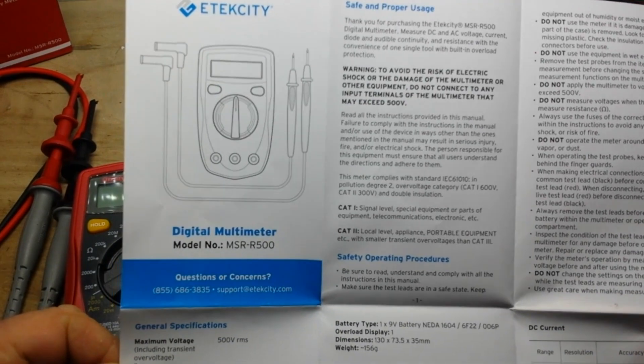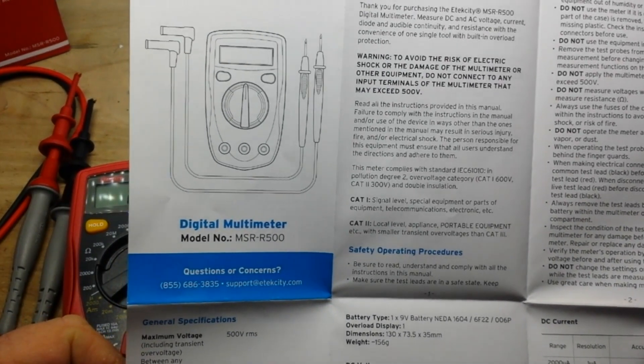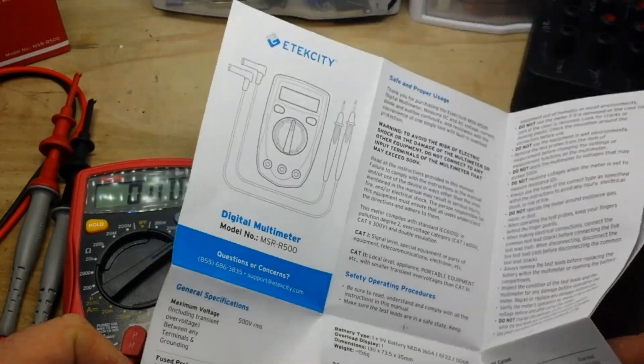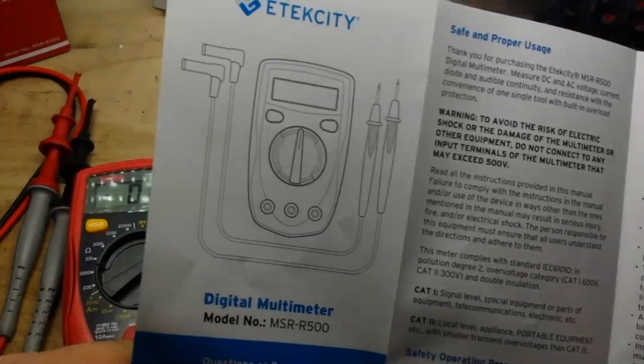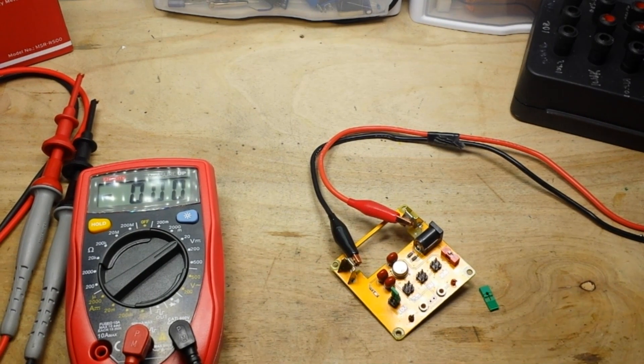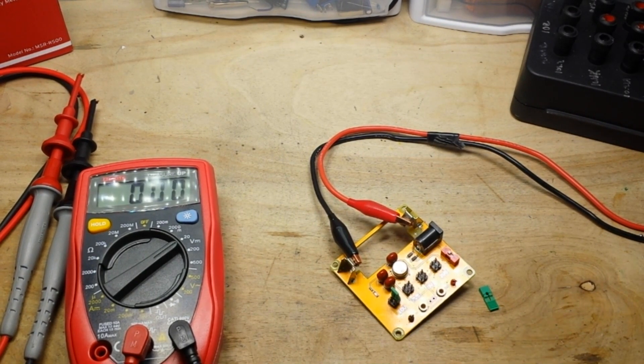500 volt RMS, 500 milliamp, manual range, 2,000 count. So yeah, not great, but it's cheap. If it's cheap and it works, I'm happy.